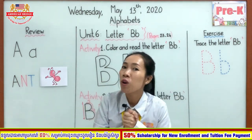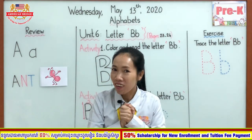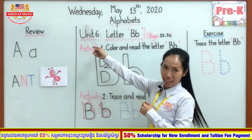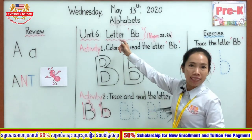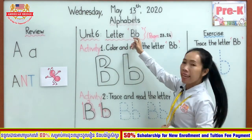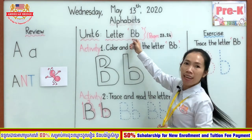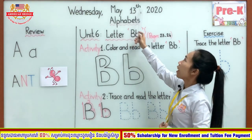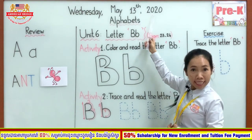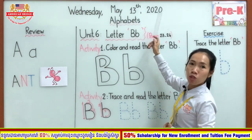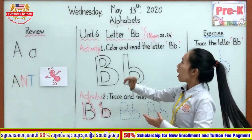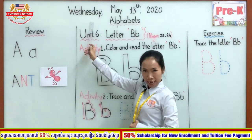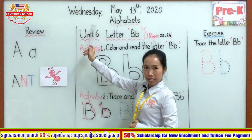Okay. Who can tell teacher what day is it today? Good. Today is Wednesday. What month is it? It's May. What is the date? The date is 13. What letters are on the top? P, A are on the top. What year is it? It's 2020. Now, repeat after teacher together: Wednesday, May.